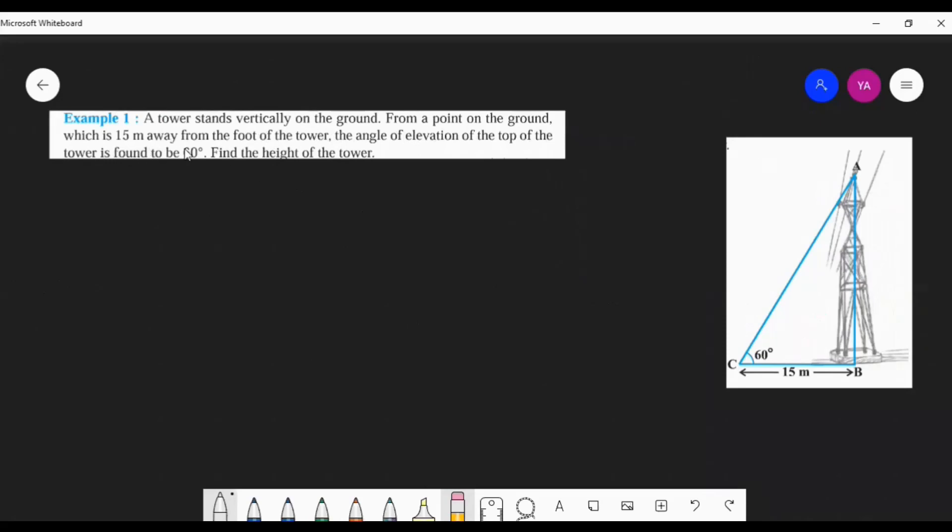This is a very simple problem. A tower is standing vertically—vertically means it will make a 90° angle with the floor. And the next point is a point on the ground which is 15 meters away from the foot of the tower.